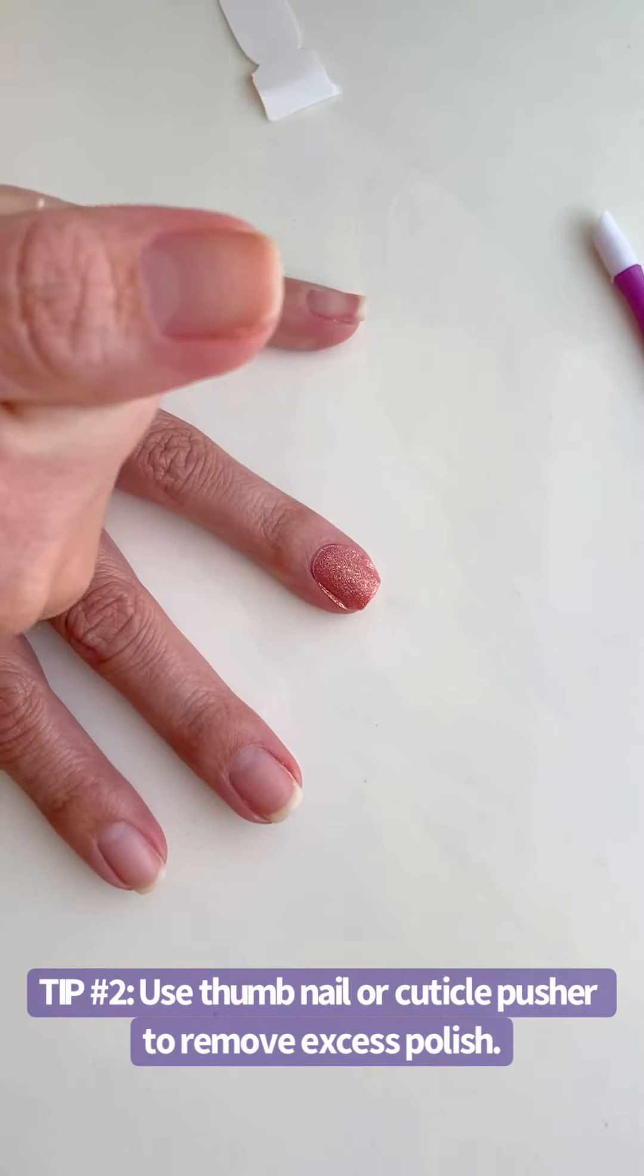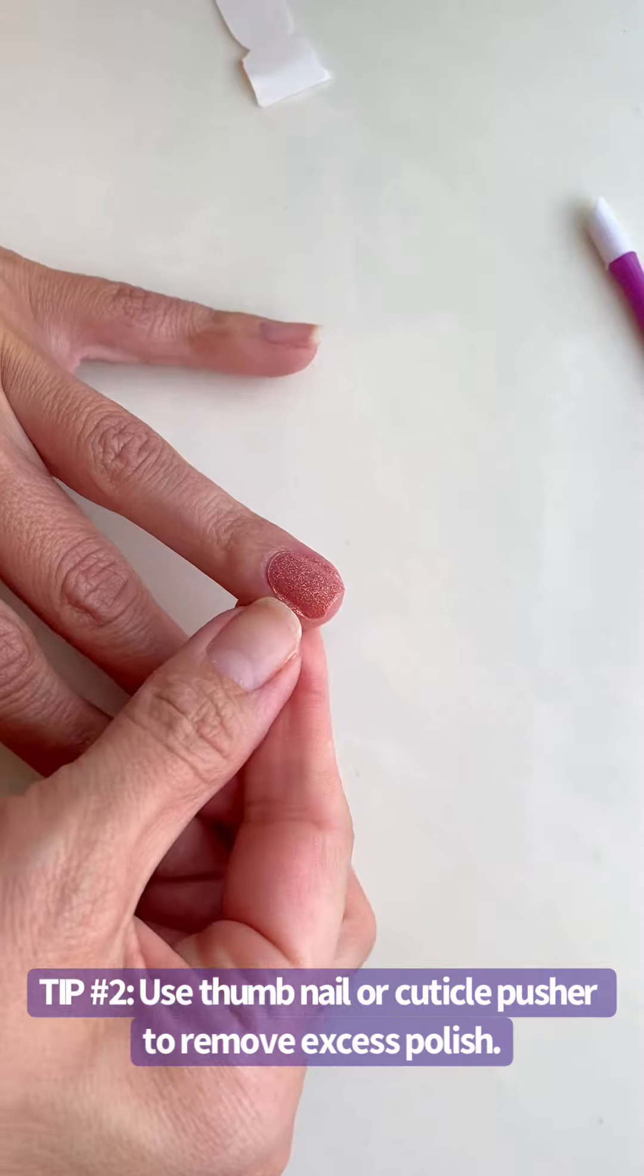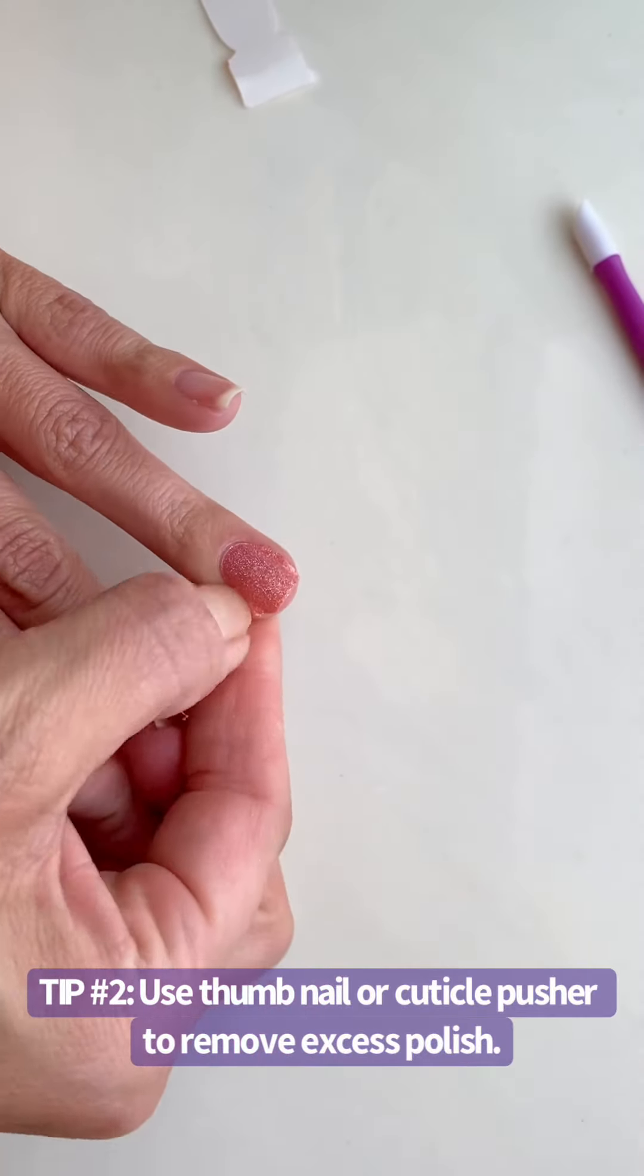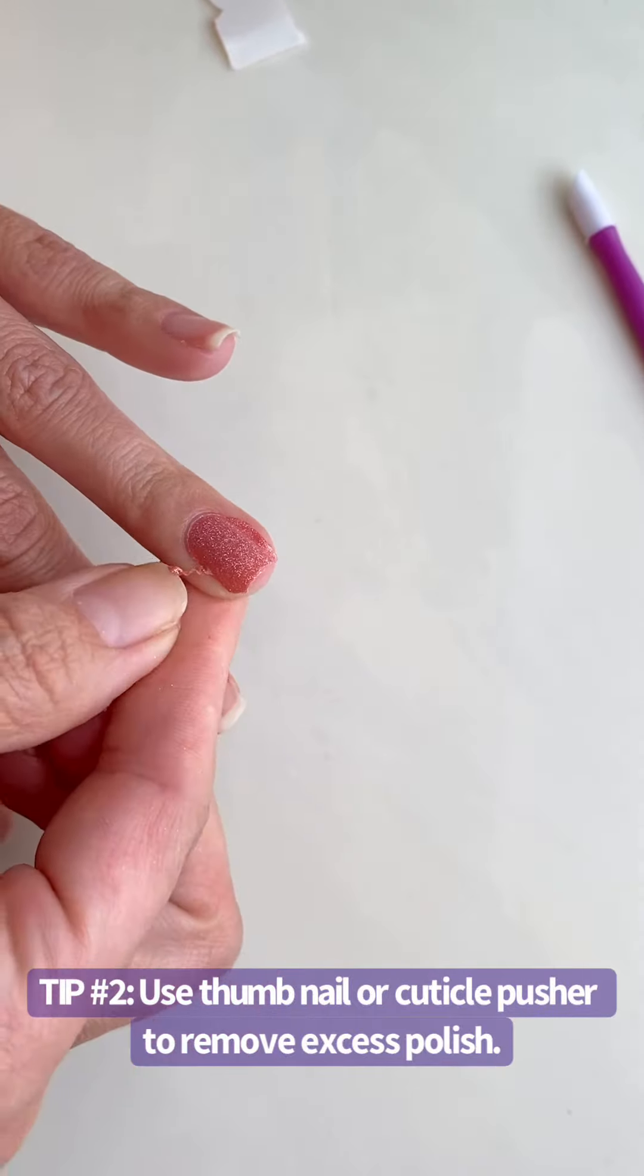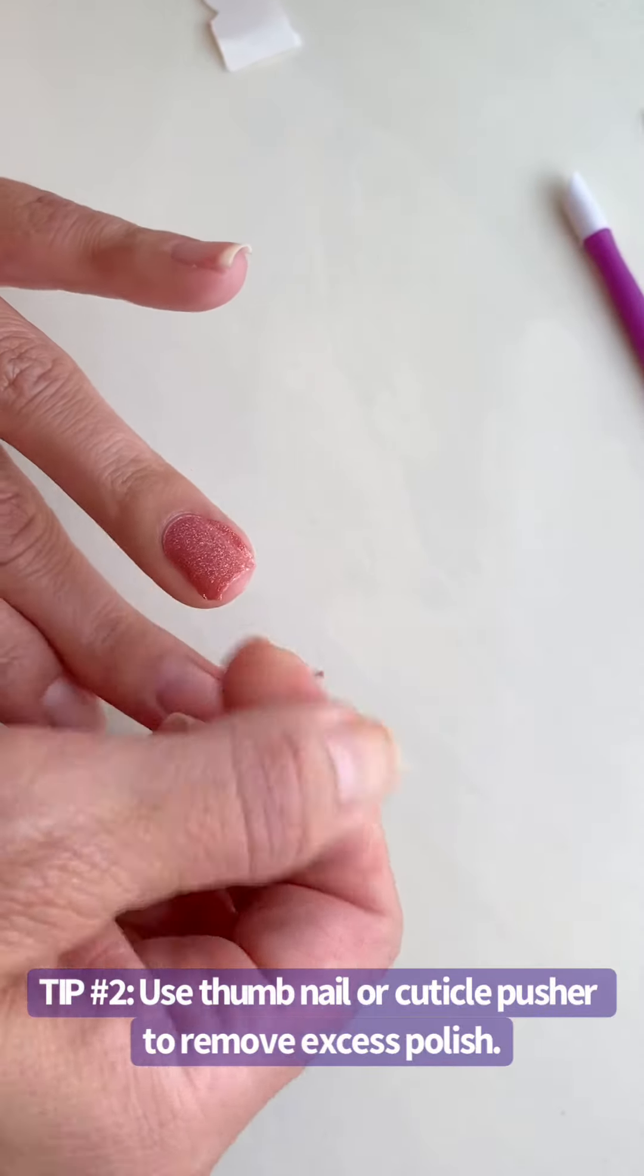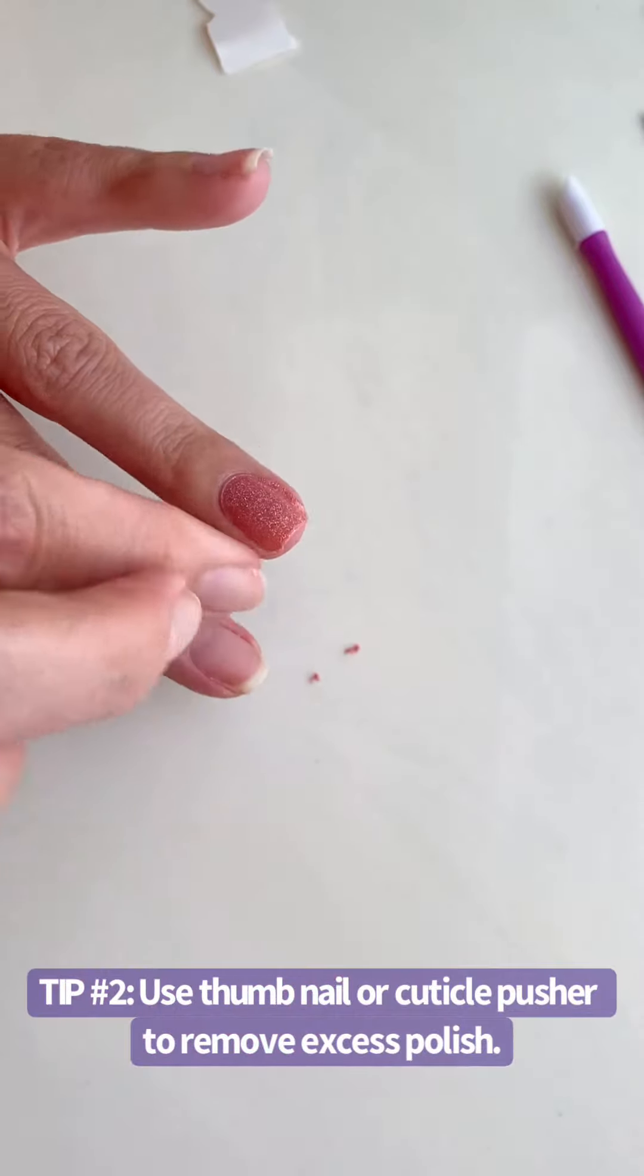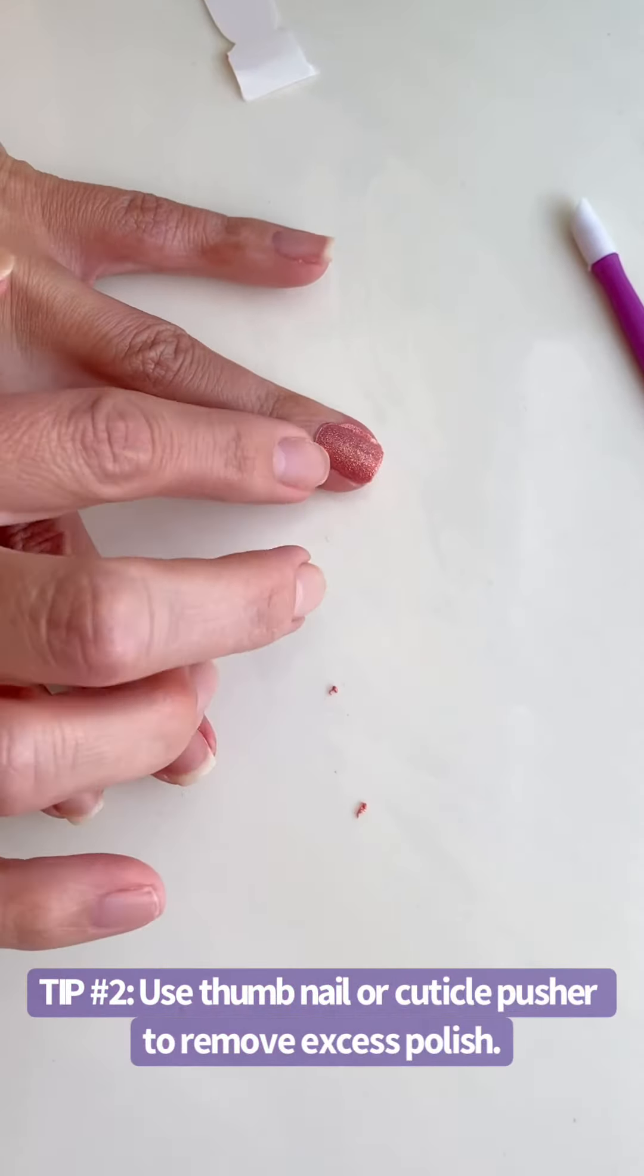So here I'm going to take my thumb and I'm going to push into the skin. I'm going to try to just go right underneath the nail and look, see, it's just simply just peeling off and it leaves a nice clean edge.